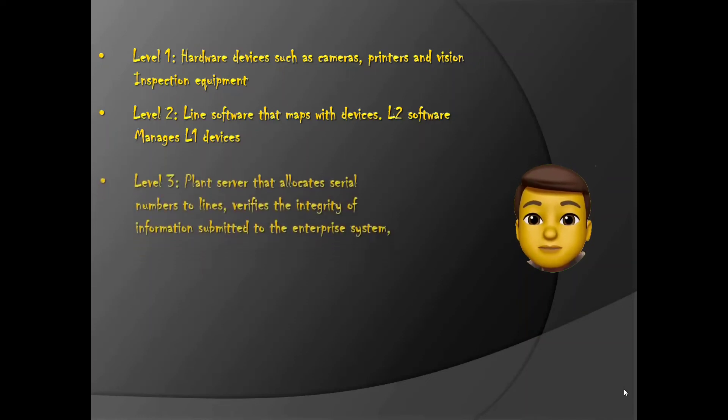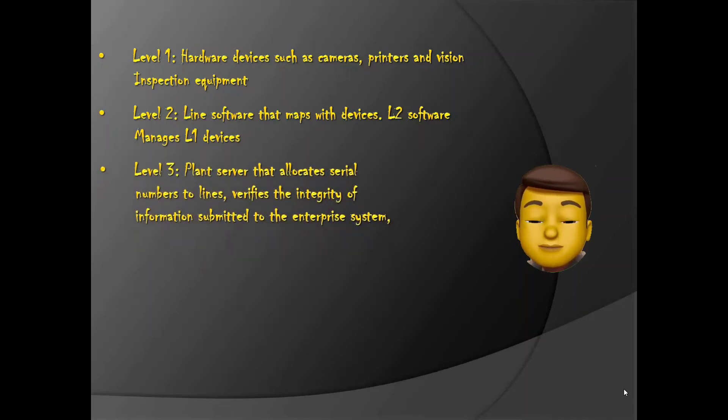Level 3 is the plant server that allocates serial numbers to lines and verifies the integrity of information submitted to the enterprise system.